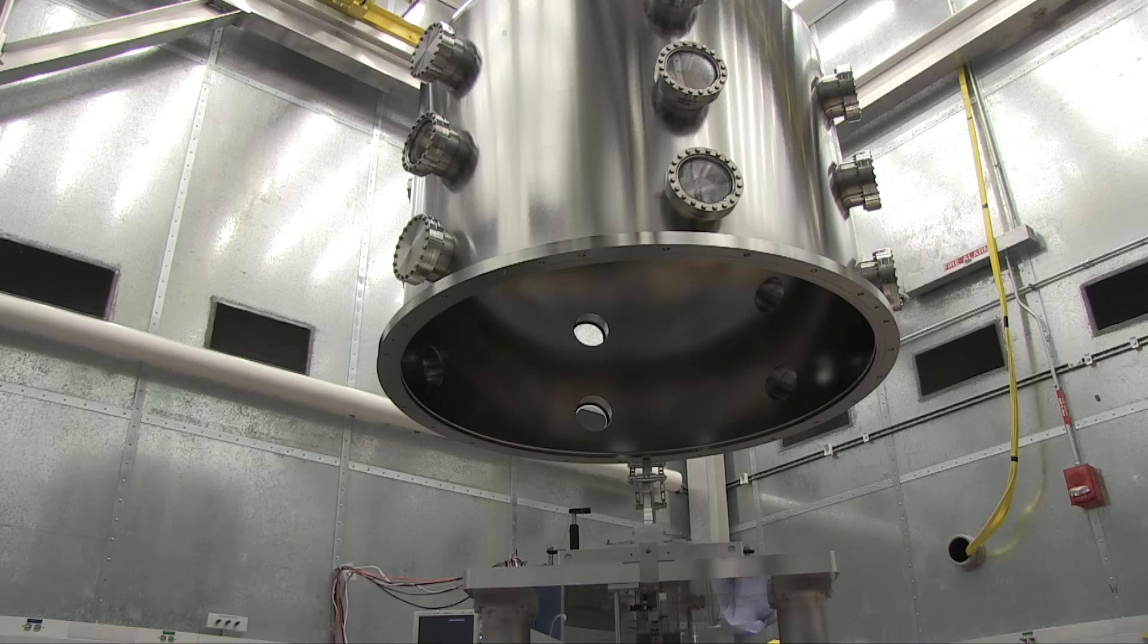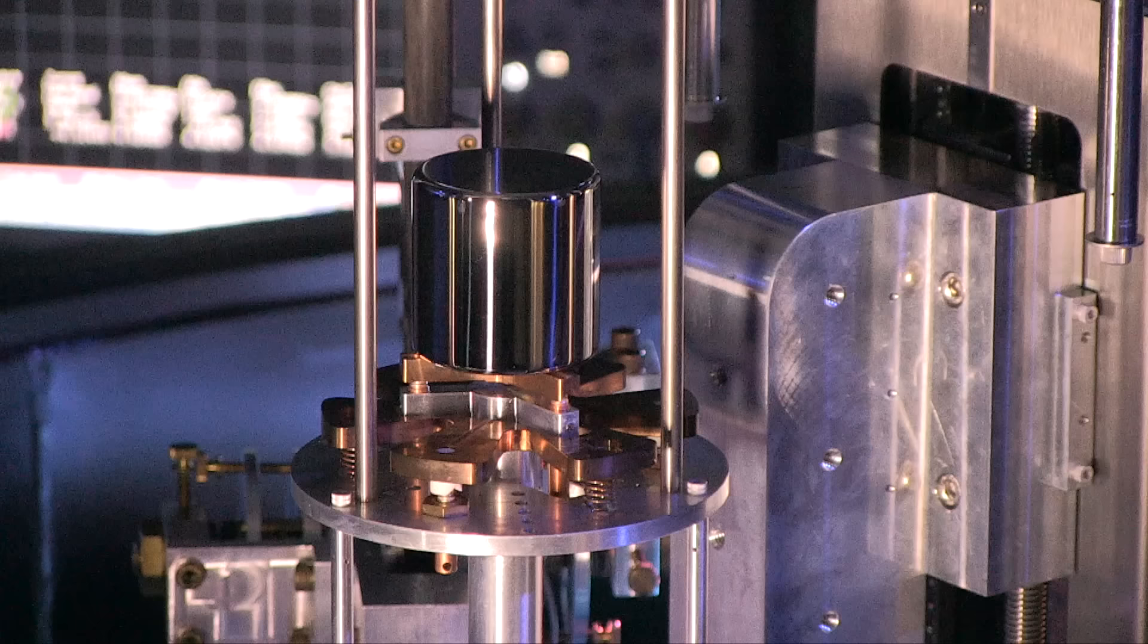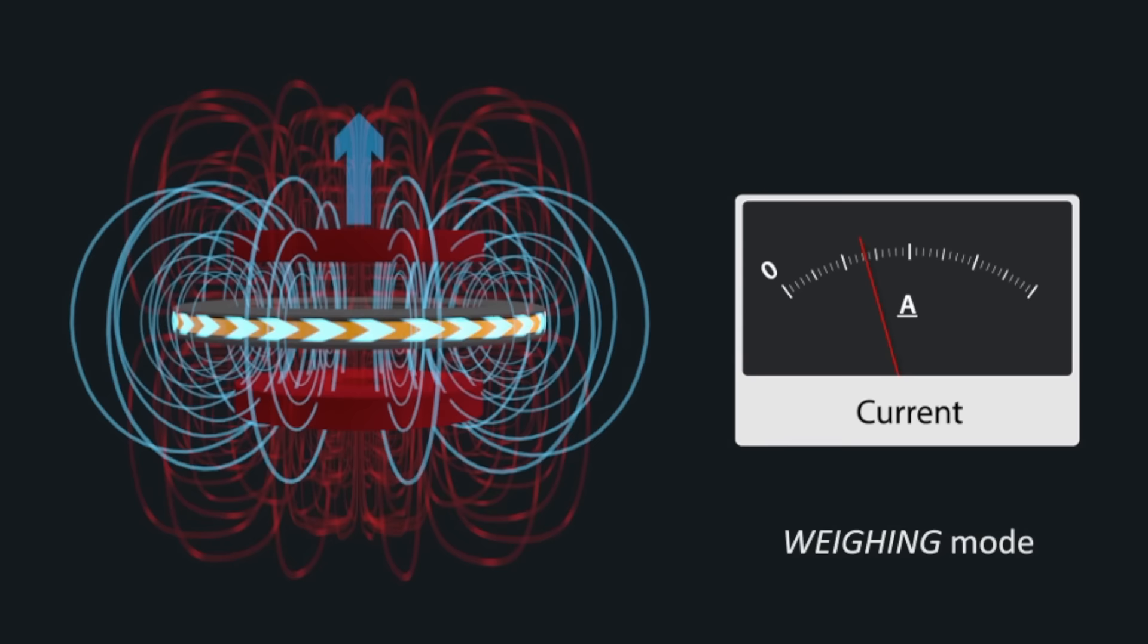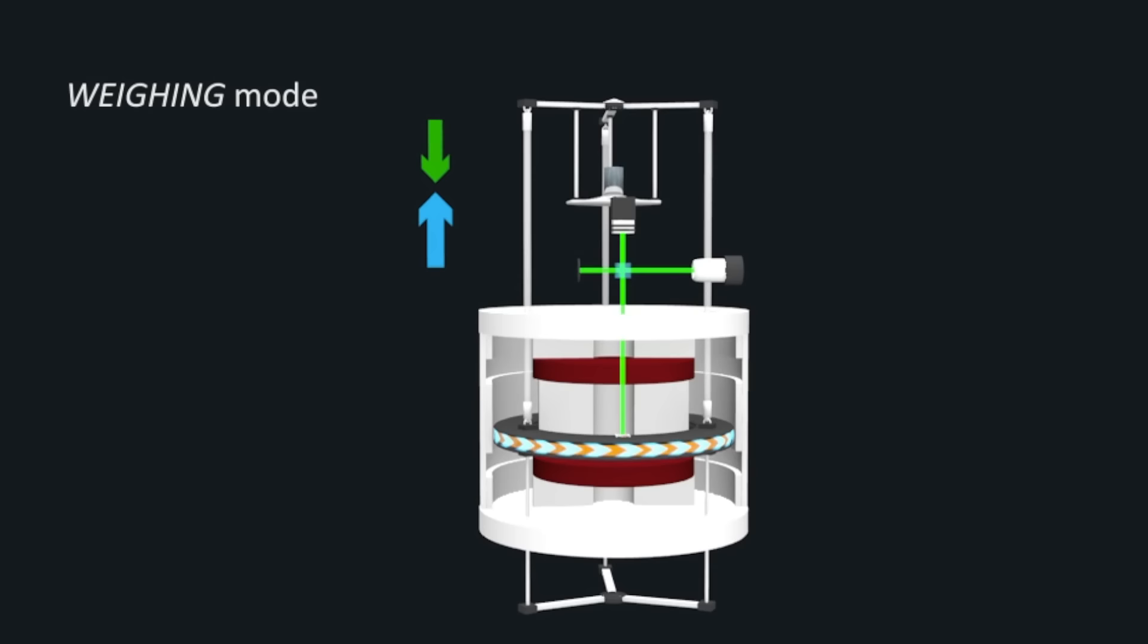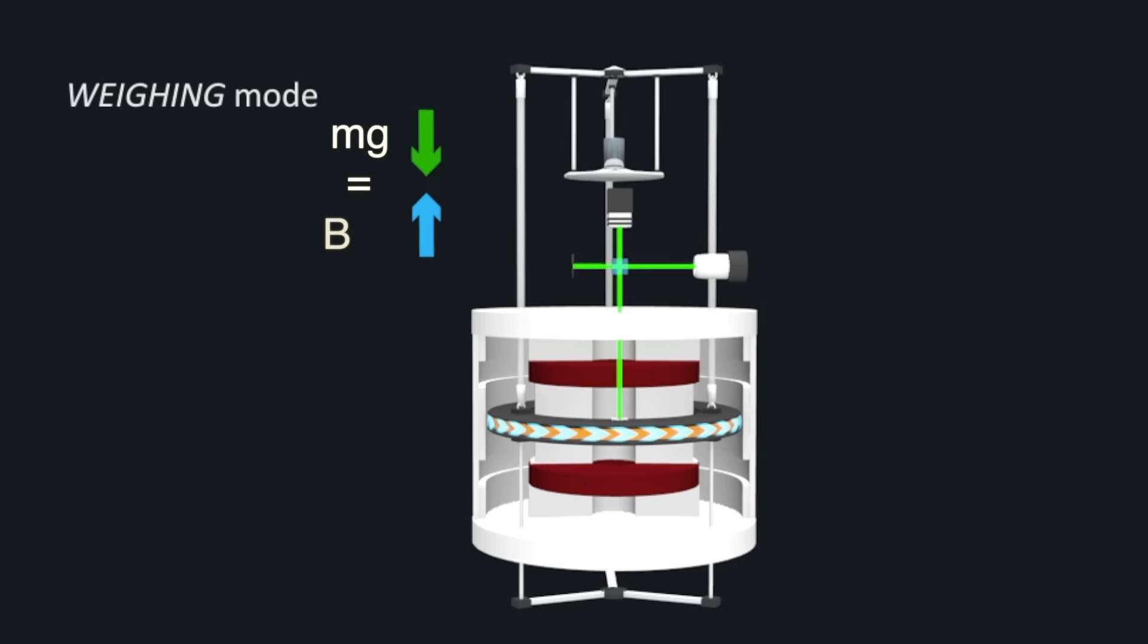The whole apparatus is sealed and operated in vacuum. The balance operates in two modes, weighing mode and velocity mode, and both are required to determine Planck's constant. In weighing mode, a kilogram mass standard is placed on the mass pan, and then current is passed through the coil in the magnetic field and adjusted until the weight of the kilogram is equal and opposite to the electromagnetic force on the coil. The equation for this is mass times the local gravitational acceleration is equal to the magnetic field times the length of wire in the coil times the current flowing through it.